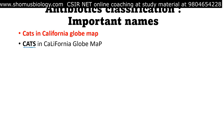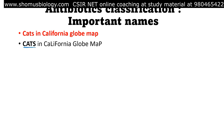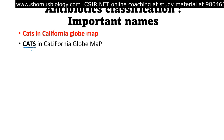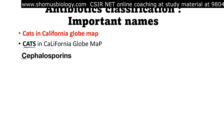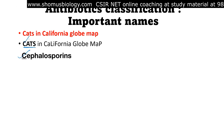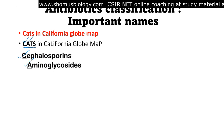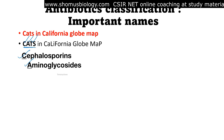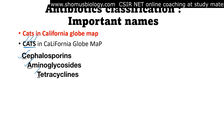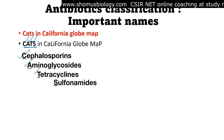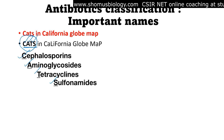CATS stands for four important things. C is for Cephalosporins, A is for Aminoglycosides, T is for Tetracyclines, and S is for Sulfonamides. All four of CATS are covered.